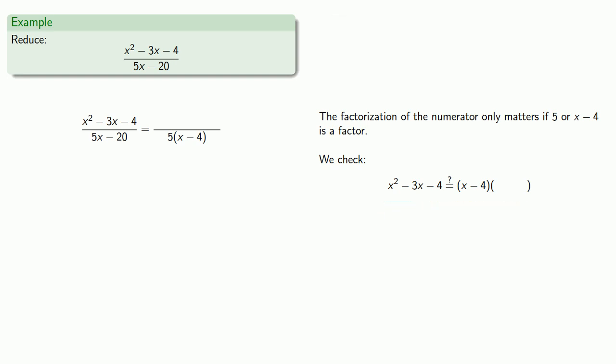Well, the only possibility for the something, our first terms have to multiply out to x squared, and our constants have to multiply out to minus 4, and so our something has to be x plus 1. And so we check, is it true that x squared minus 3x minus 4 is x minus 4 times x plus 1? And in this case, we're fantastically lucky, and it is true.